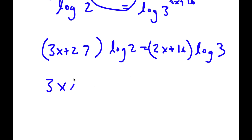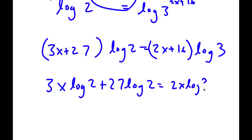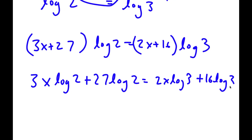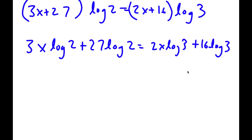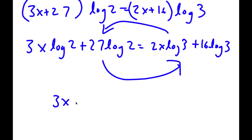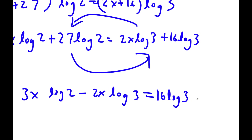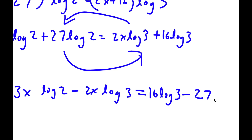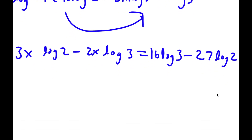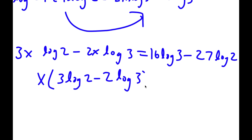Now if I distribute, I get 3x times log 2 plus 27 times log 2 is equal to 2x times log 3 plus 16 times log 3. Moving terms to group x on one side: 3x times log 2 minus 2x times log 3 is equal to 16 log 3 minus 27 log 2. Factoring out x, I get x times 3 log 2 minus 2 log 3 is equal to 16 log 3 minus 27 log 2.